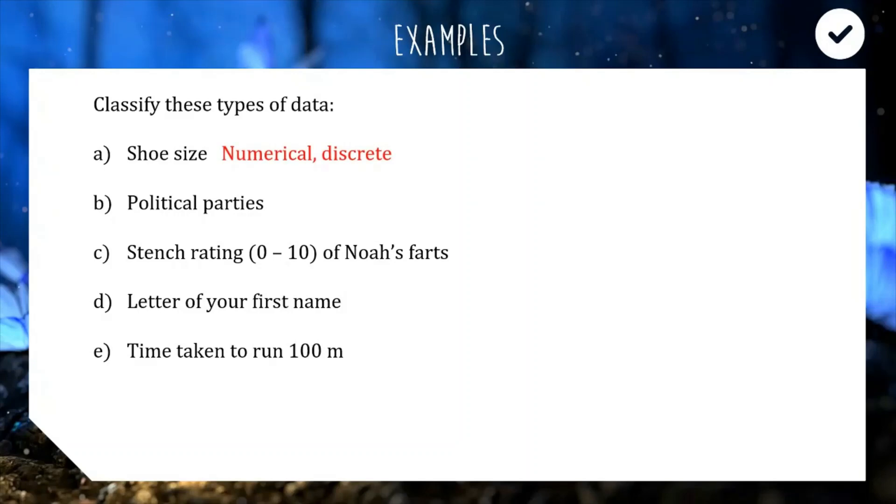For B political parties are of course categories, there's no clear order for political parties I would argue. You could say you could order them from most left to most right but I wouldn't say there's a clear order so this one would be categorical and it would be nominal because there is no clear order.